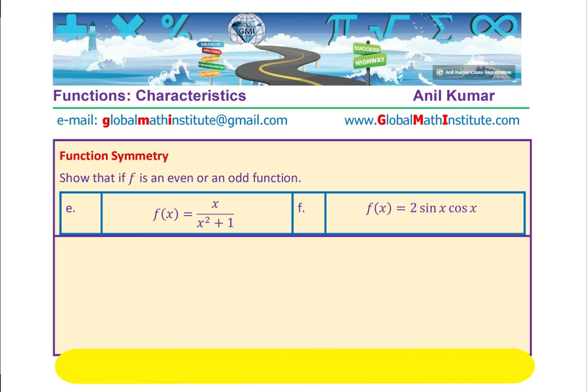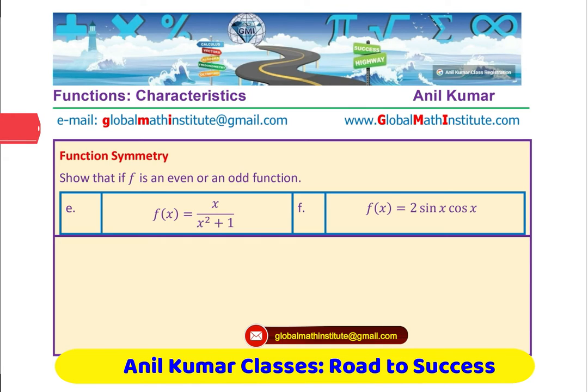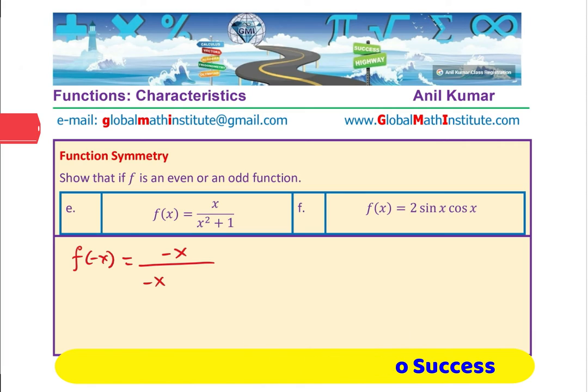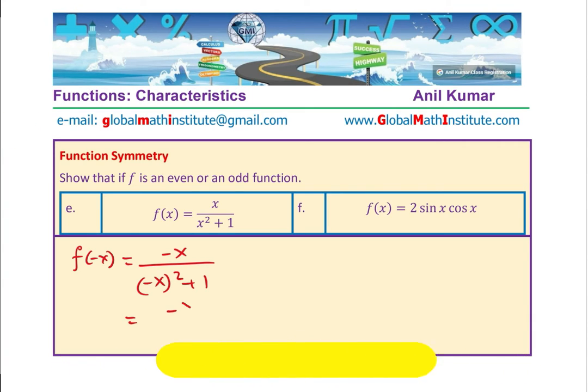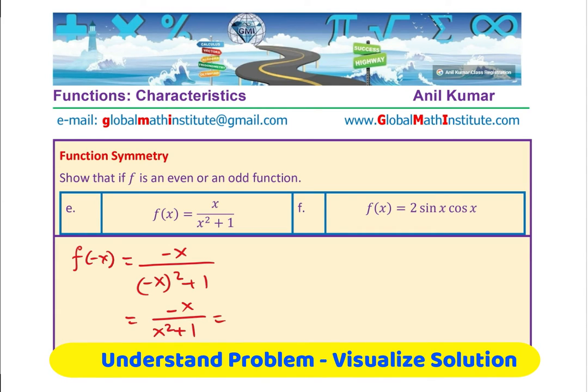Here are the last two examples, very important. We have a rational function and a trigonometric function. Let us see how we work with these. So standard method: f(-x) is what? We get -x in the numerator, (-x)² + 1 in the denominator. That gives us -x/(x² + 1), and this is -f(x). Therefore, this function has an odd symmetry.